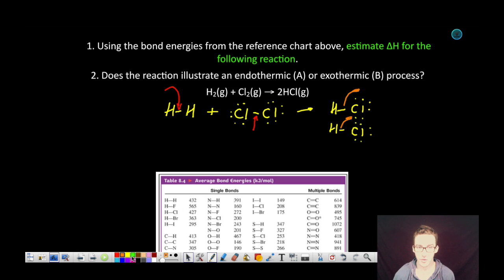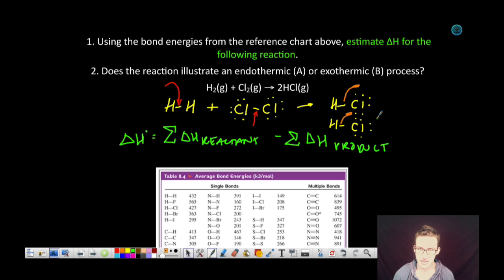To figure that out, we're going to use the equation where the delta H of the reaction is equal to the sum of the enthalpy changes in the breaking of those reactant bonds minus the sum of the enthalpy change as the energy is released from the formation of those product bonds.